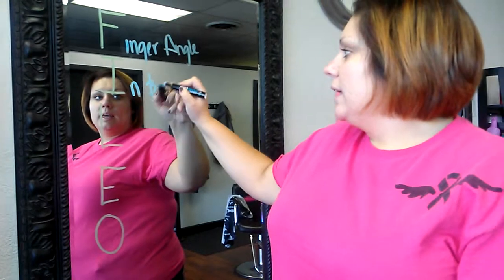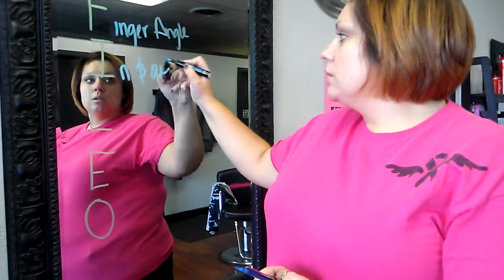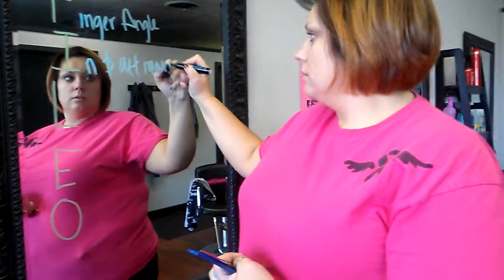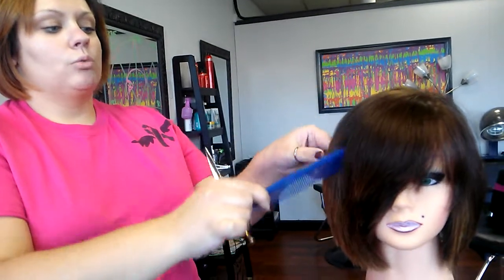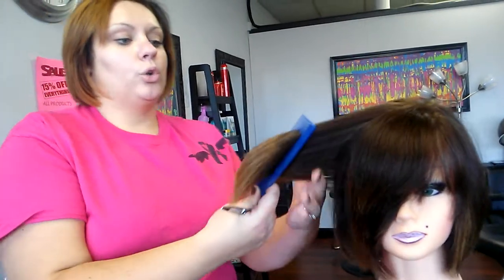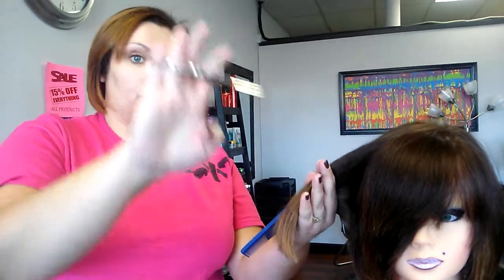In and out movement is the next movement in structure of motion. The in and out movement refers to total movement between your control hand, your cutting hand, and your body. This will help us determine the length of the hair from short to long within a haircut.